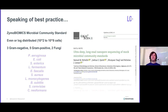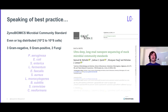Speaking of best practice, you might have seen this paper from us about a year ago. We sequenced the Zymobiomics microbial community standard, which is a mock community consisting of 10 organisms: 3 gram negatives, 5 gram positives, and 2 fungi. This standard is available in two flavors — an even distribution and a log distribution. The even community has the bacteria at 12% abundance and the fungi at 2%, and the log-distributed community has the organisms titered between 10² and 10⁸ cells. We sequenced both of these communities on both the Gridion and the PromethION, and we made all of this data available free and open source for people to use and develop their own tools.